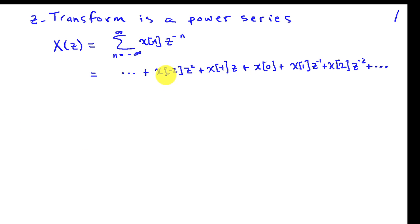Let's start with N equals minus 2. We've got X of minus 2 Z squared plus X of minus 1 Z plus X of 0 times Z to the 0, which is 1, plus X of 1 Z inverse plus X of 2 Z to the minus 2 and so on.